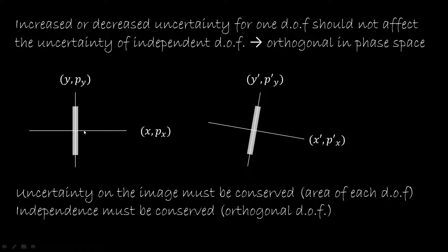For example, this line here represents the x-px plane and this line here represents the y-py plane. This represents our uncertainty in the y-py plane and this represents the uncertainty on our x-px. If we were to increase the uncertainty on the y-py plane, we would expect that the projection on the x-px plane remains the same, so the uncertainty represented on these planes remains the same. This can only happen if the y-py plane is orthogonal to the x-px plane. If it wasn't orthogonal, then the projection would increase on the x-px plane and the degrees of freedom wouldn't be truly independent.